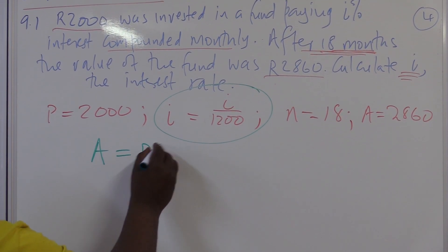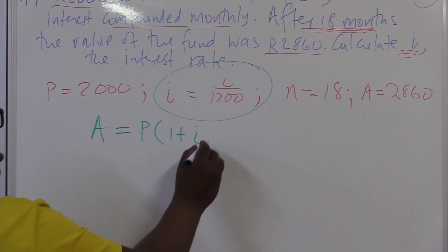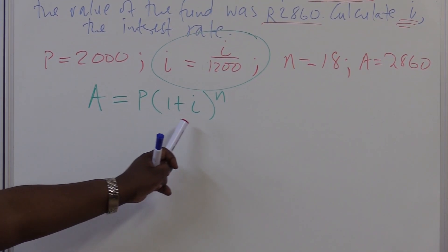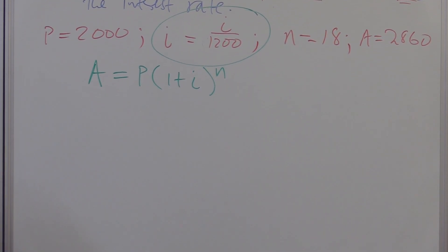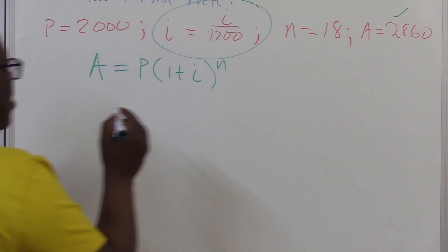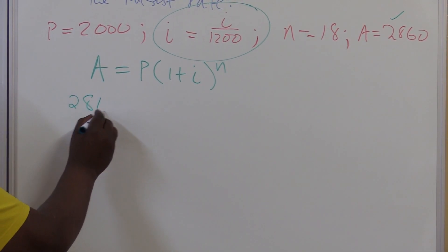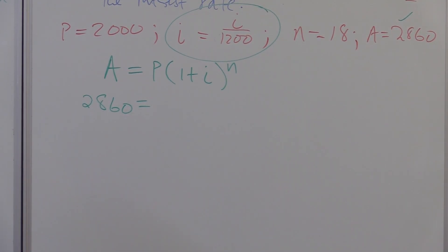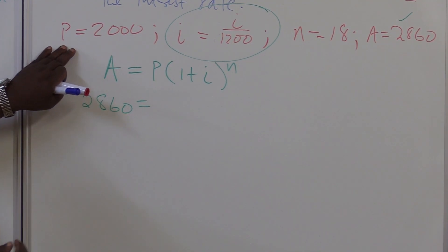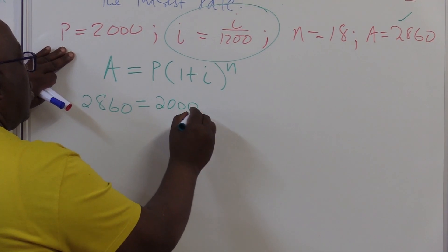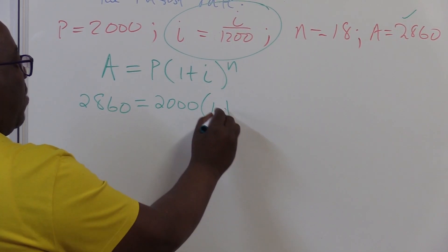A equals P into 1 plus I raised to the power N. Remember what we're looking for, we're looking for this I. Let's substitute. Did we have the value of A? Yes, we do have the value of A. This is A, I've captured it, it is 2860 equals. Do I know my principal amount, the money that I invested? Yes, I do have the value of P. In this particular case, it is 2000.